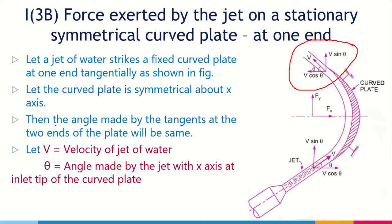For the unsymmetrical plate, replace the outlet angle theta with a new angle, say phi. In the diagram you show two different angles: theta at the inlet and phi at the outlet. The outlet velocity components become V cosφ and V sinφ. This is the only change needed in the diagram. You cannot show the same angle at both inlet and outlet for an unsymmetrical plate.